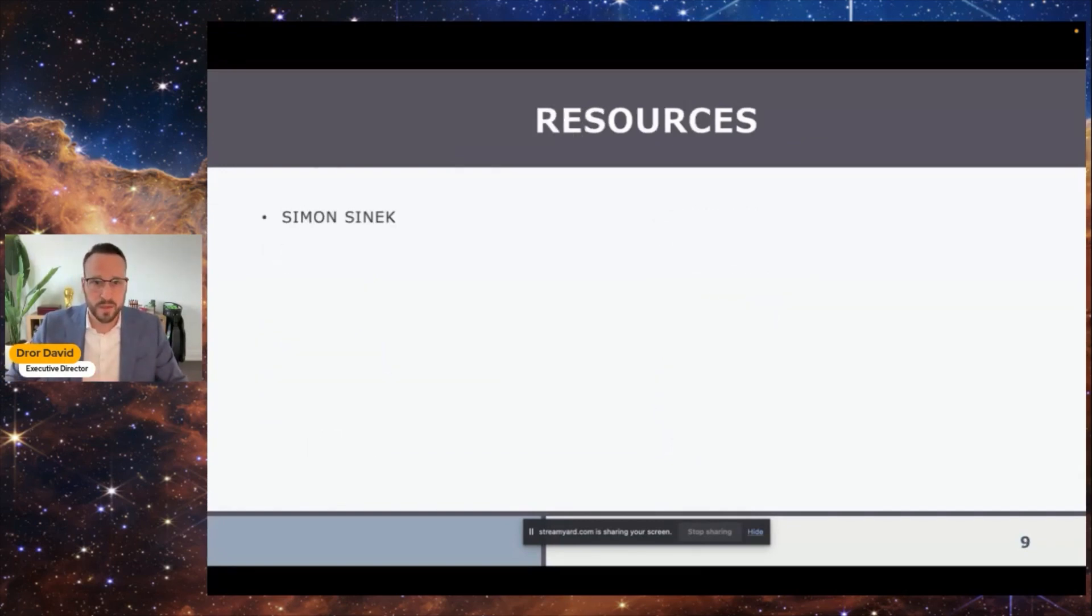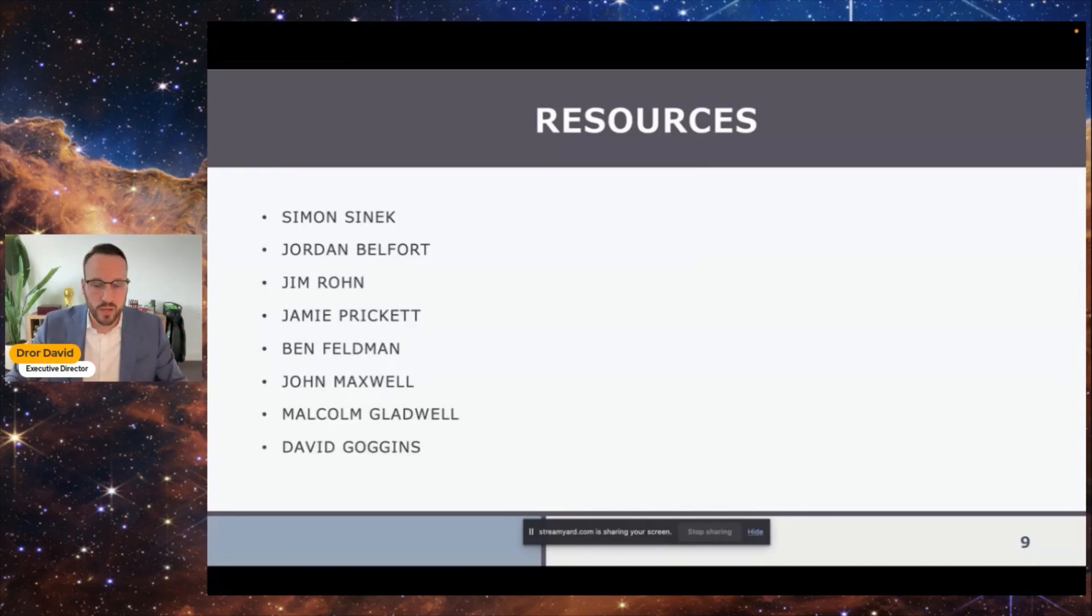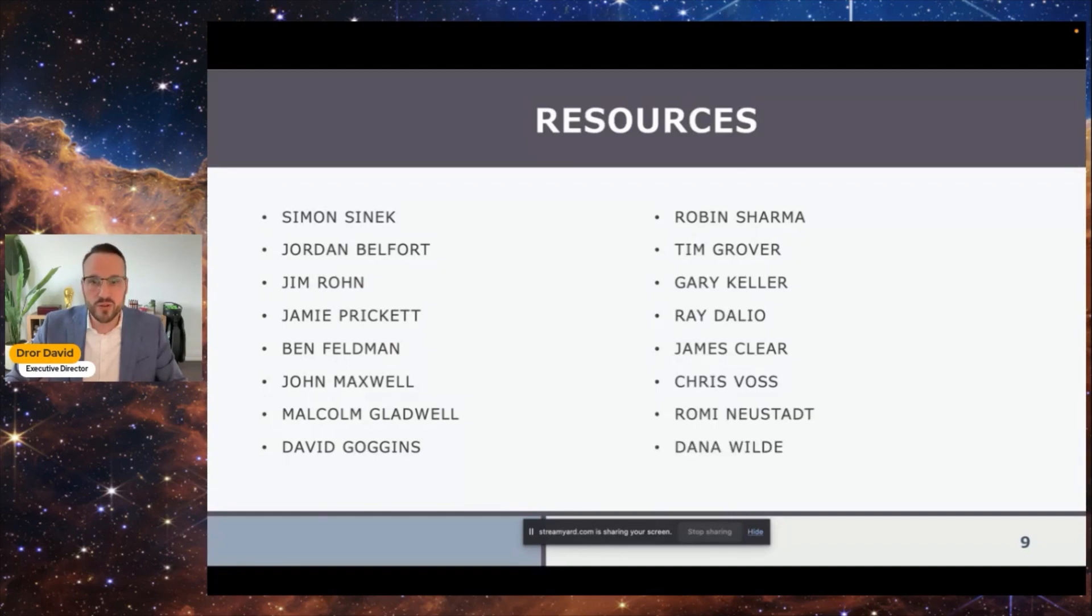What are some resources and authors you can read? Simon Sinek revolutionized my life in business. Jordan Belfort with The Way of the Wolf. Jim Rohn - amazing leader, may you rest in peace. Jamie Prickett, Ben Feldman, John Maxwell, Malcolm Gladwell, David Goggins, Robin Sharma, Tim Grover, Gary Keller, Ray Dalio, James Clear, Chris Voss, Rami Sethi, and Dana Wilde. These are just some authors you can look at to learn about leadership.